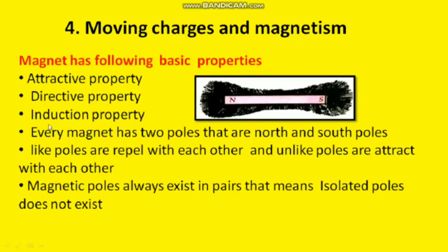The next property is the induction property. If a magnet is in contact with iron, that iron is also converted into a magnet — it can also have attractive power. The magnetic property is induced in another magnetic substance, and that is called the induction property.